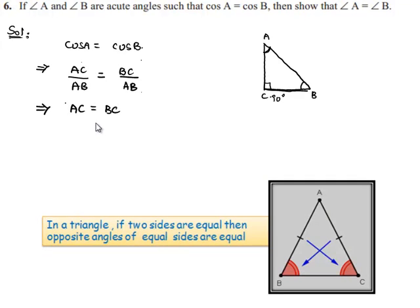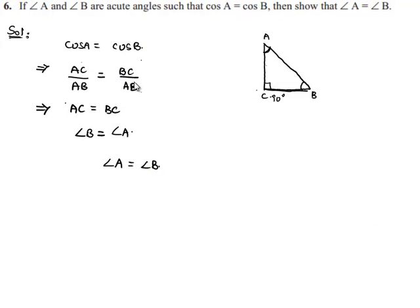We know that angles opposite to equal sides are equal. The angle opposite to AC, which is angle B, is equal to the angle opposite to BC, which is A. Therefore, we got angle A is equal to angle B when cos of both angles are equal.